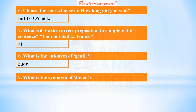What is the synonym of 'jovial'? The synonym (samarth shabda) of 'jovial' is 'gay.' Jovial and gay both mean cheerful or joyful (praphulla).